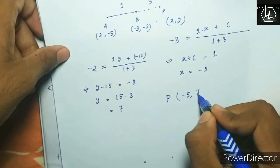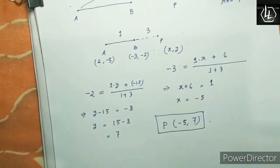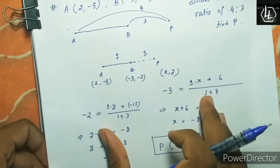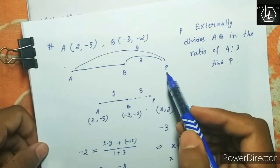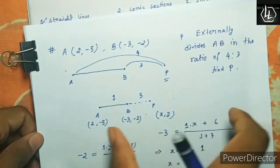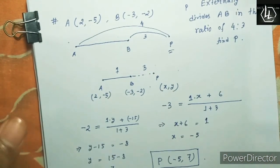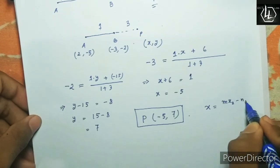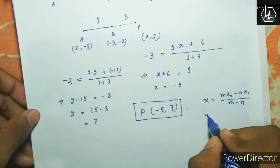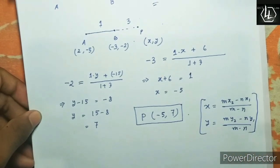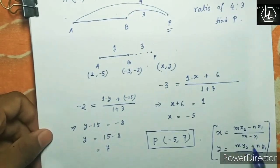The coordinates of P are minus 5 comma 7, and this is the final answer. Whenever you are asked to find coordinates using the internal section formula, apply the process directly. For external section, either convert the question to use the internal section formula, or apply the external formula: x equals M times x2 minus N times x1 over M minus N, and y equals M times y2 minus N times y1 over M minus N.